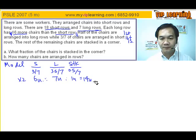Part A asks what fraction of chairs are stacked in the corner. So question A is simply 1 unit out of total 14. That's the chairs stacked in the corner.